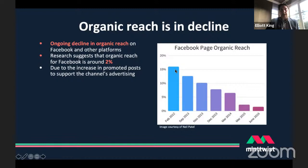At one point, nearly 10 years ago, we might have expected more than 15% of our existing network to see our organically posted content. Normalised data now suggests that figure is down to around 2%. So that's a real challenge.